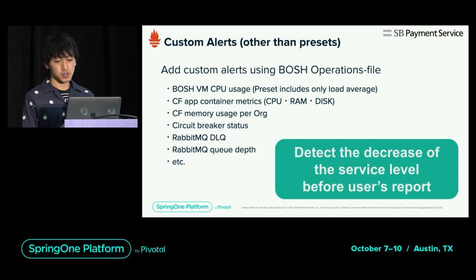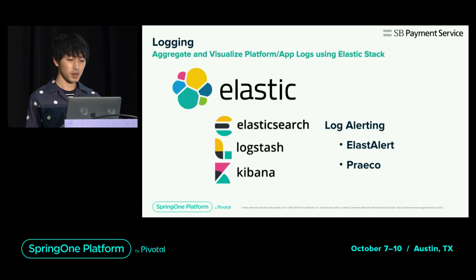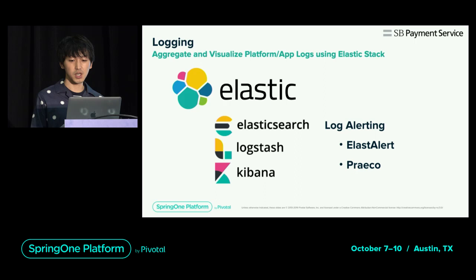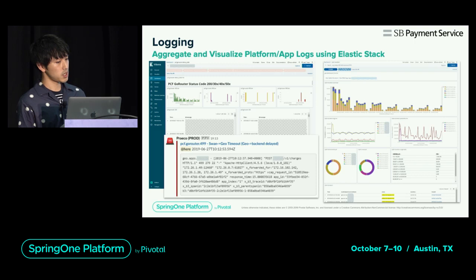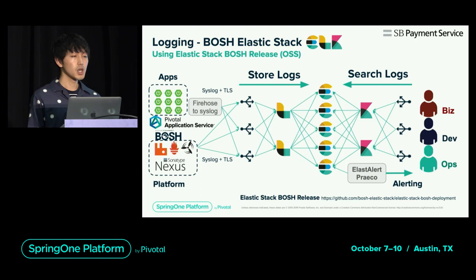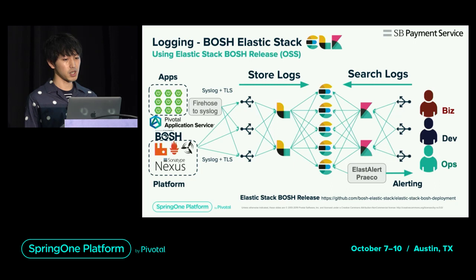Next is logging. Platform and app logs are aggregated and visualized using the Elastic Stack. ElastAlert and PlyCore are used for log alerting. Dashboards are created from the collected logs and used for operation. Elastic Stack is also built by BOSH — we are using the community BOSH release to form a cluster. Logs are stored in Elasticsearch by syslog TLS via load balancer and Logstash. We use Kibana to search logs and receive alerts from ElastAlert and PlyCore.